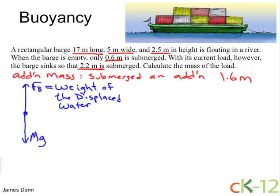What is that equal to? The weight of the displaced water is equal to the mass of the displaced water times the acceleration of gravity. And mass is equal to density times volume.